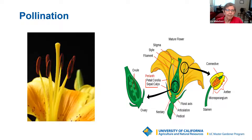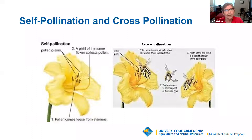The flowers have nectar, which the bees, hummingbirds, and butterflies want. They come for the nectar, but in the process their bodies touch the pollen, they move around the flower, rub against the stigma, and pollen drops to the bottom. We have self-pollination, where the pistil of the same flower collects pollen — possibly from wind — or cross-pollination, where the bee picks up pollen and flies to another flower to pollinate it.